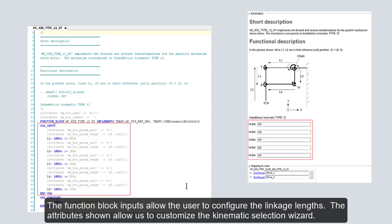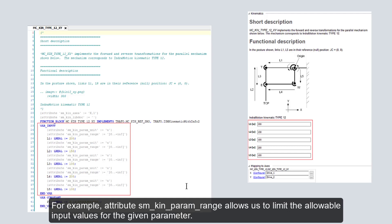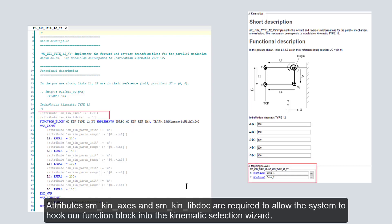The function block inputs allow the user to configure the linkage lengths. The attributes shown allow us to customize the kinematic selection wizard. For example, attribute SMKINParamRange allows us to limit the allowable input values for the given parameter. Attributes SMKINAXES and SMKINLibDoc are required to allow the system to hook our function block into the kinematic selection wizard.